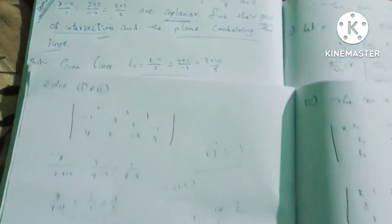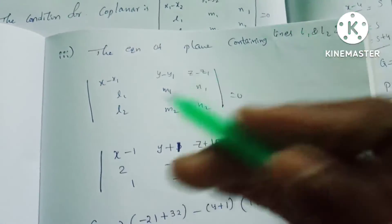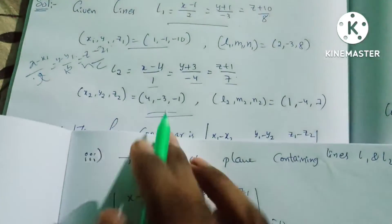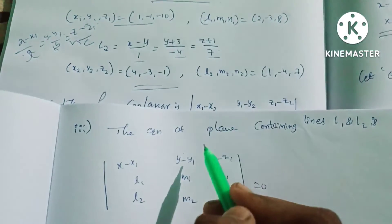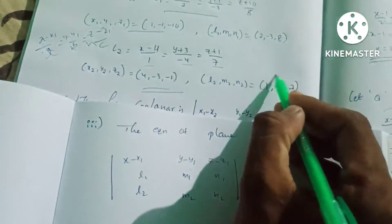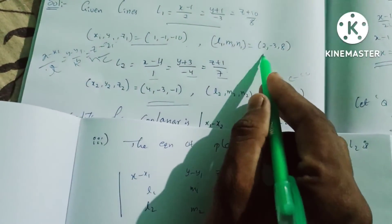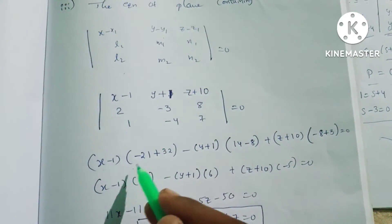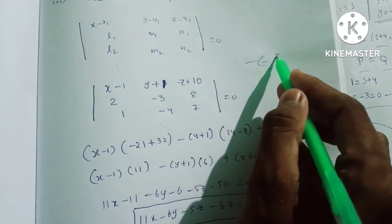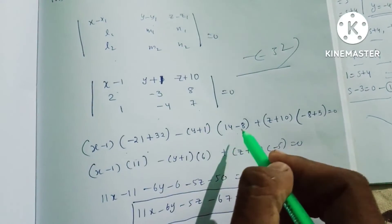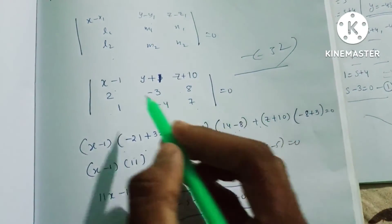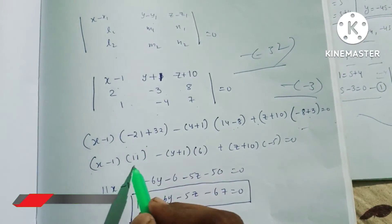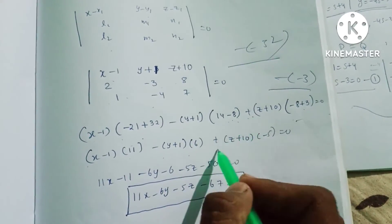Third part: find the equation of the plane containing the two lines. Using the formula with the determinant of (x−x1, y−y1, z−z1), (l1, m1, n1), (l2, m2, n2), substituting x1 = 1, y1 = −1, z1 = −10, l1 = 2, m1 = −3, n1 = 8, l2 = 1, m2 = −4, n2 = 7.